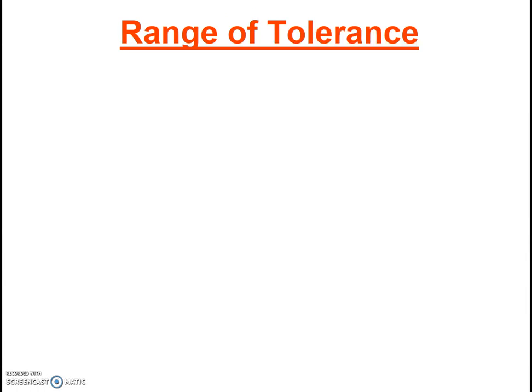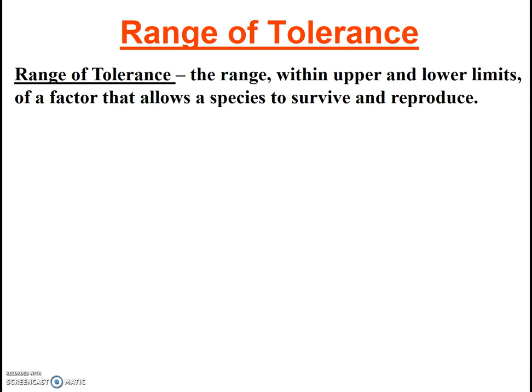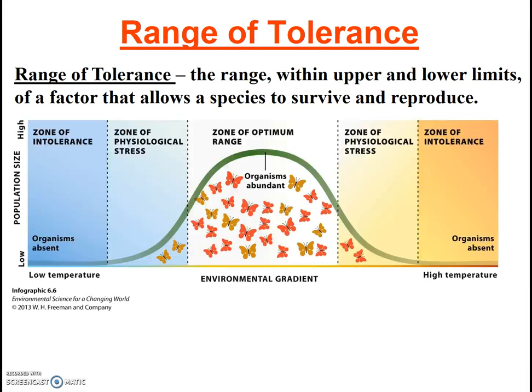Range of tolerance is another important ecological concept. It seems logical that a population will not flourish if a particular nutrient is below some sort of minimum concentration. However, generally there is also a maximum concentration above which the population will also be stressed or even unable to survive. The range between these limits is called the range of tolerance. Graphically, infographic 8.6 depicts the range of tolerance.